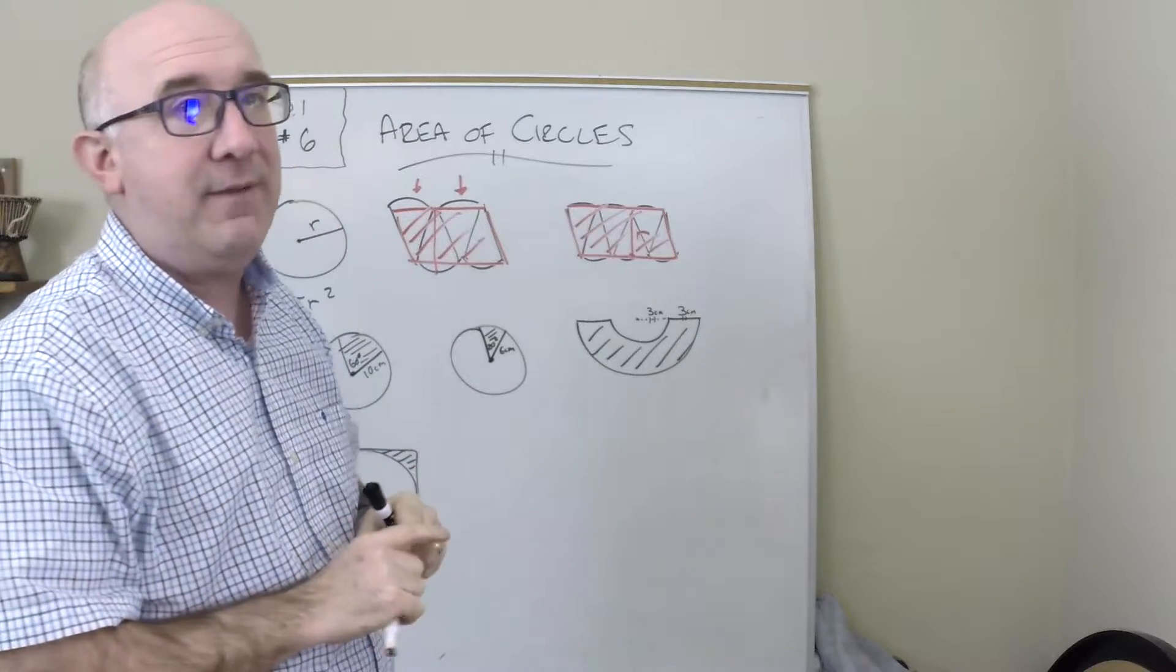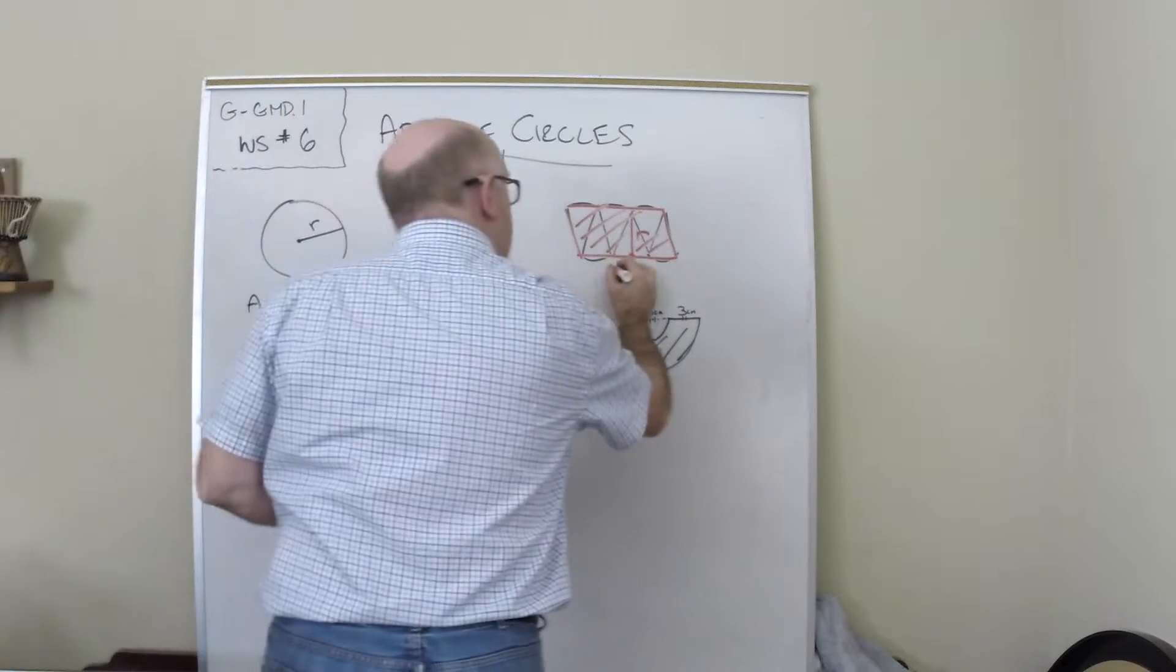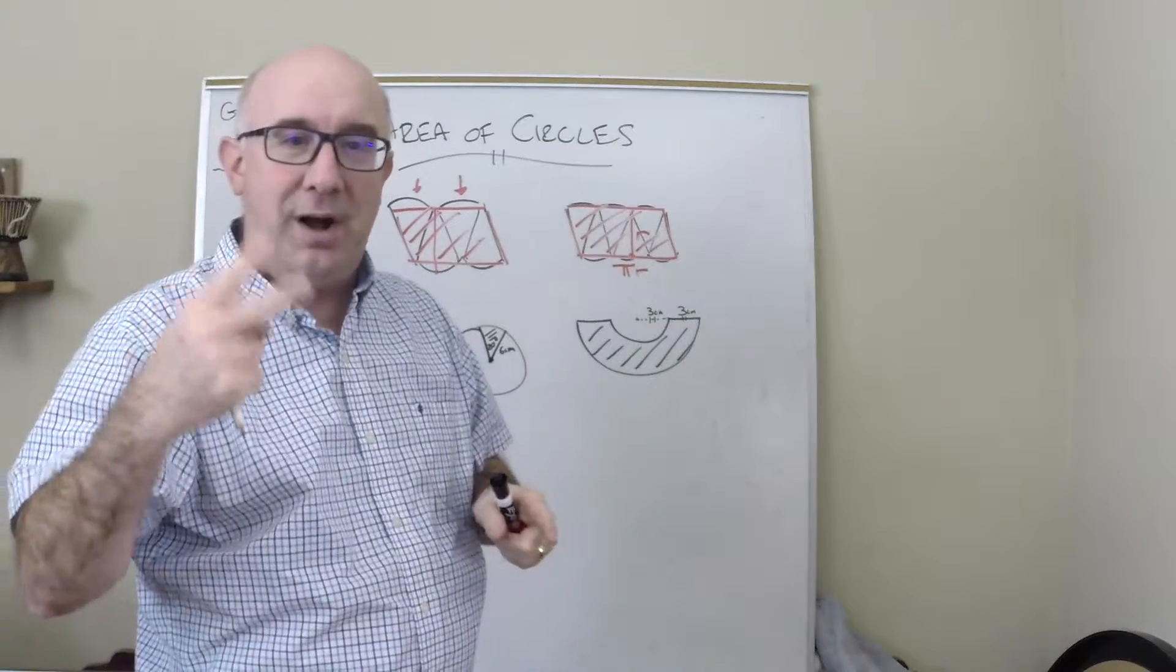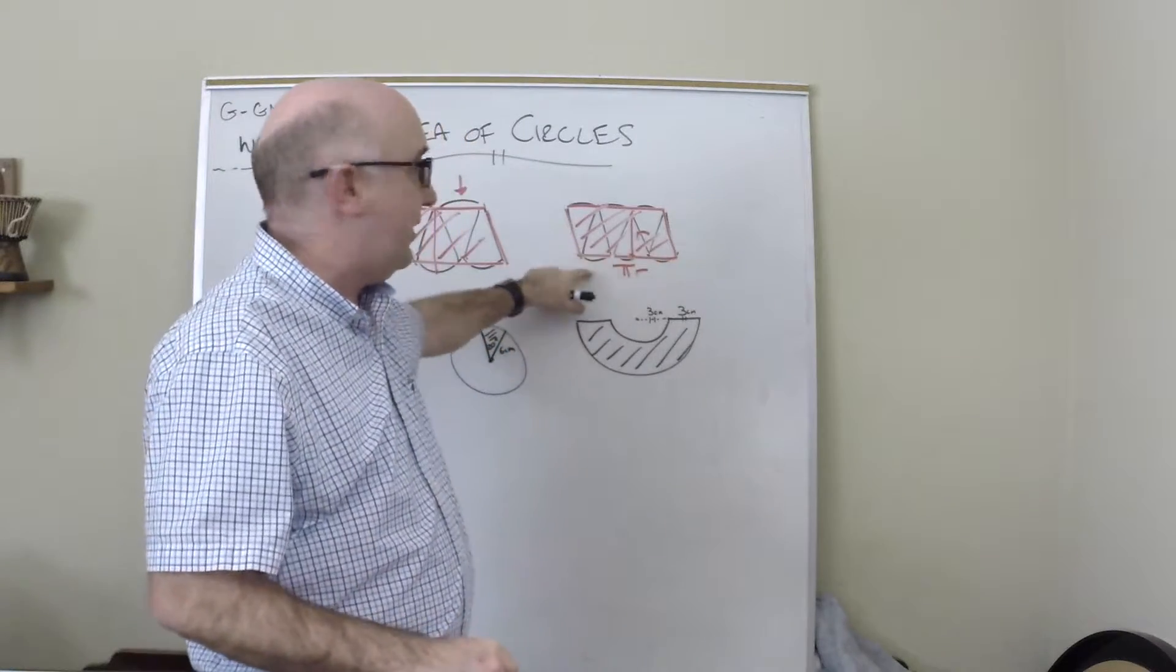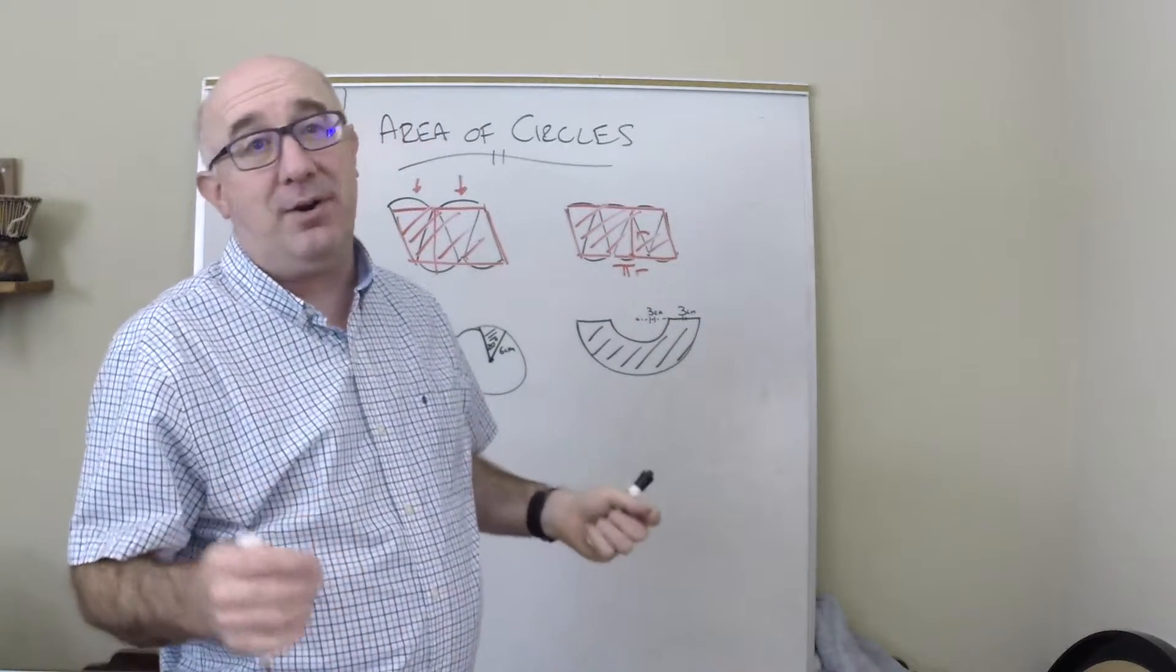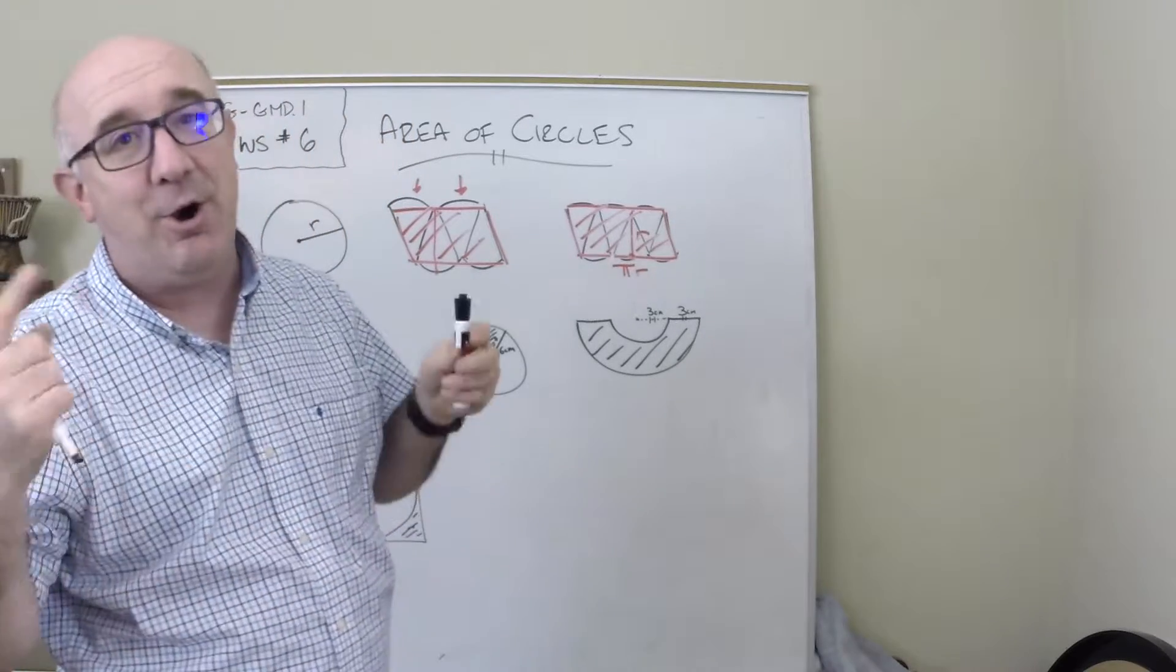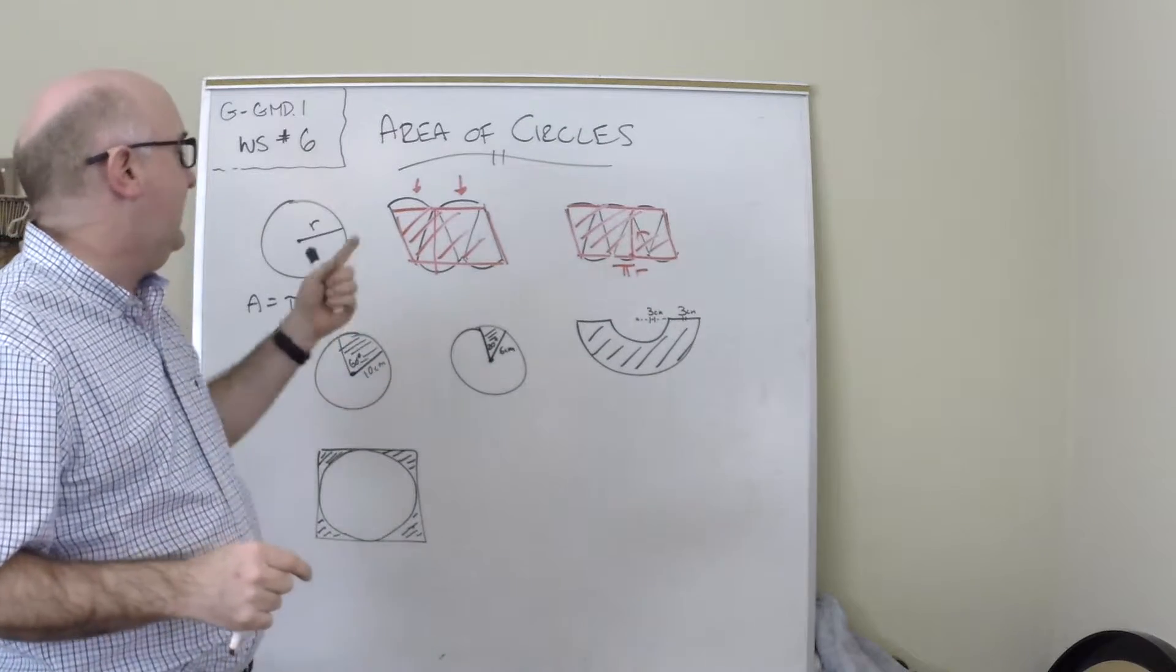And then the other thing is that the other dimension is pi r. The reason it's pi r is the entire circumference is 2 pi r, and so if it's 2 pi r, half of the circumference is on these bumps and half is on those arcs. So it's just pi r. And when you multiply those two together, the base of the parallelogram times the height of the parallelogram, you get pi r squared. Kind of cool, isn't it?